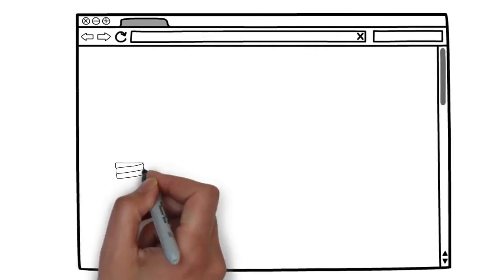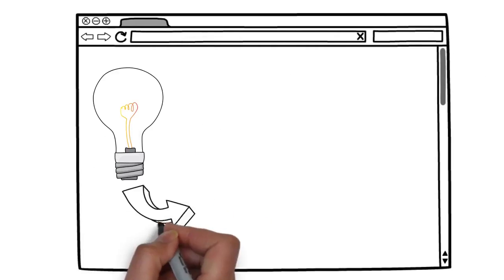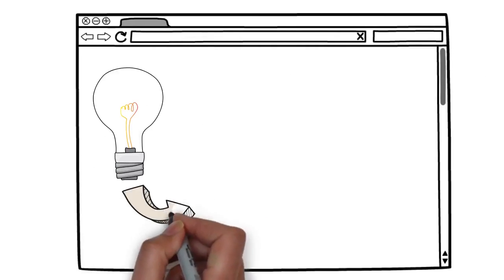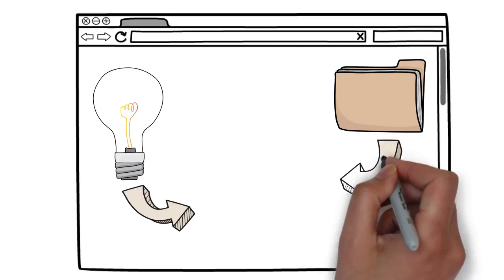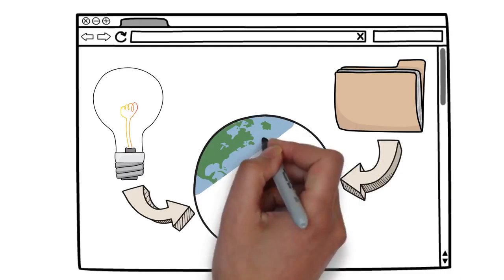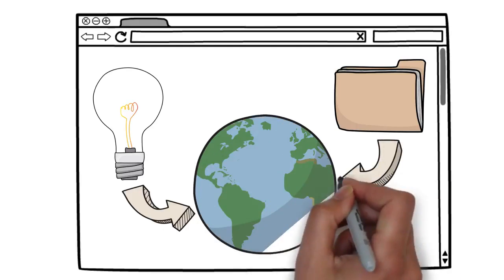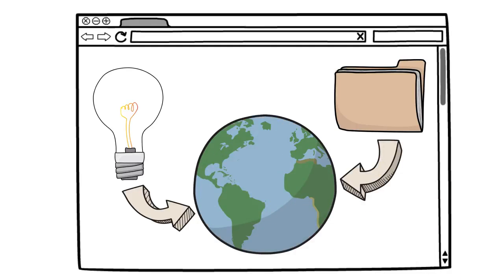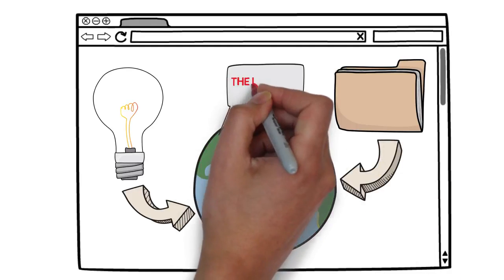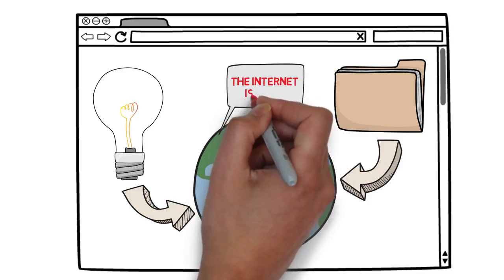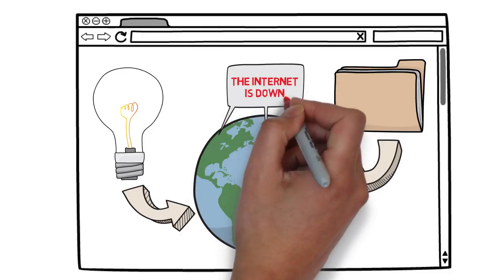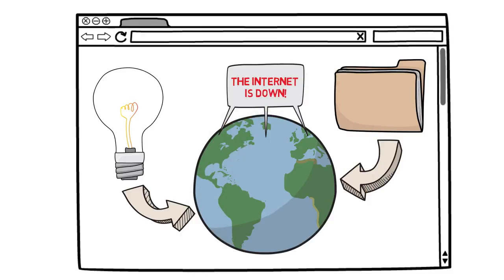The internet. It interconnects ideas and information in a blink of an eye across the entire globe. We rely on it constantly and take it for granted equally as often. That is, until something goes wrong.